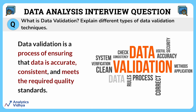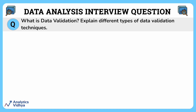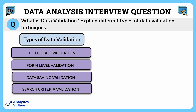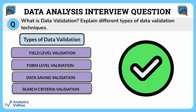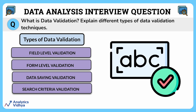There are many types of data validation techniques used today. One of them is field level validation. Field level validation is done across each of the fields to ensure that there are no errors in the data entered by the user. Think of this like a spell checker for individual words.